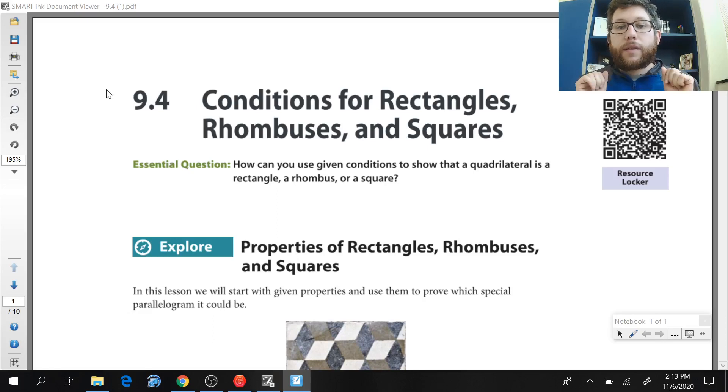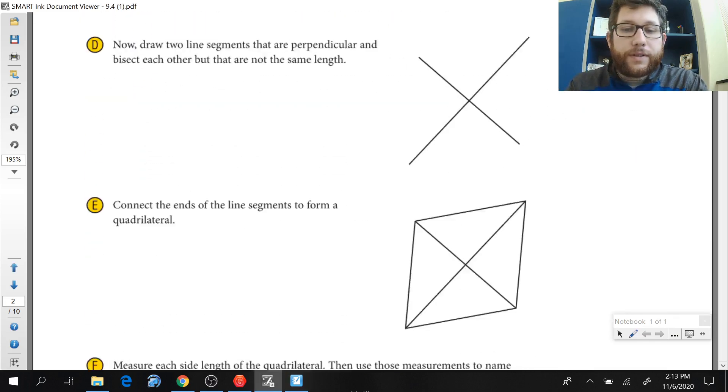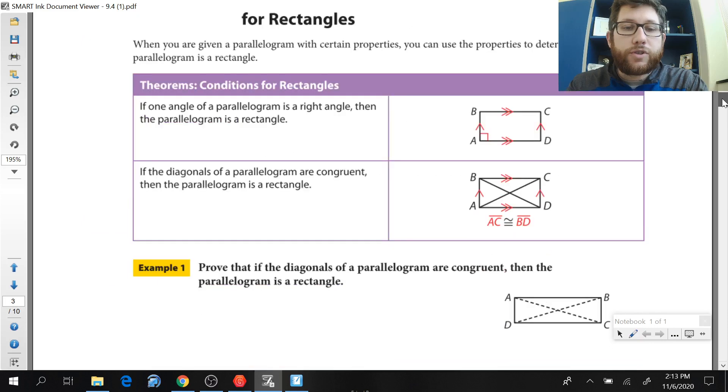All right guys. So in the most recent video, we talked about if I have a rectangle or a rhombus or a square, then what do I know? We're going to do the converse today. What does it take to prove a quadrilateral would necessarily be a rectangle, rhombus, or a square? Now this should be a shorter video. We should be able to roll through this pretty quickly. We're not going to do the proofs, we're just going to kind of talk through the proofs on a lot of these.